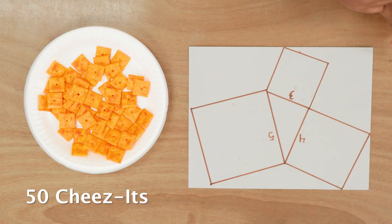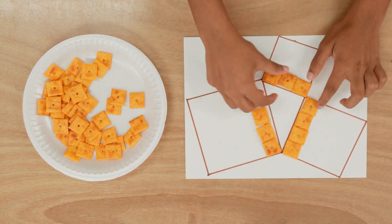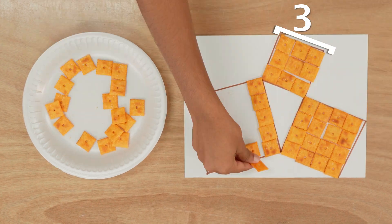Let's head to the lab and recreate how Pythagoras discovered the theorem. For this lab, we're going to be using Cheez-Its as our unit of measure. You will need 50 Cheez-Its. Let's create three squares with side lengths of 3, 4, and 5.